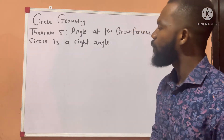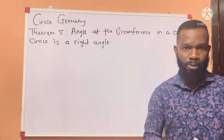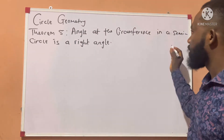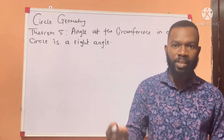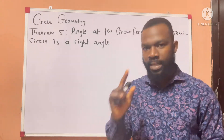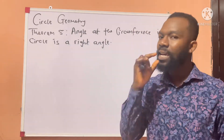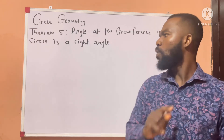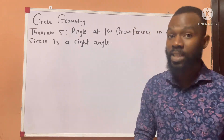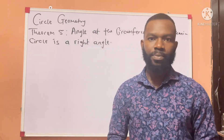Tier 5 today talks about: the angle at the circumference in a semicircle is a right angle. When you say right angle, it means it's 90 degrees. When you say semicircle, it means half a circle. And we all know that for you to have a semicircle, there must be a diameter. So for Tier 5 to hold, there must be a diameter in the circle. What we are going to learn today is how to prove that the angle at the circumference in a semicircle is 90 degrees and also how we can apply this theory in solving examples.